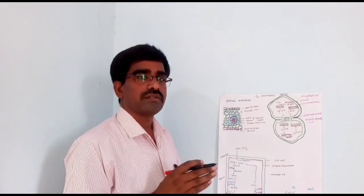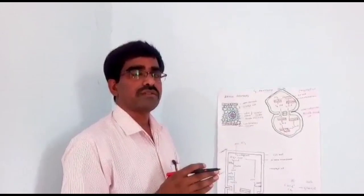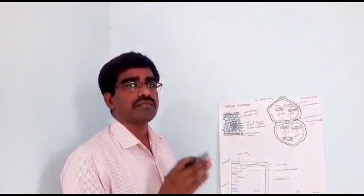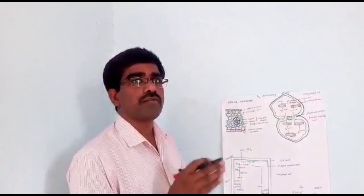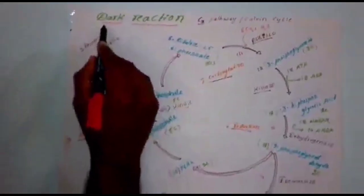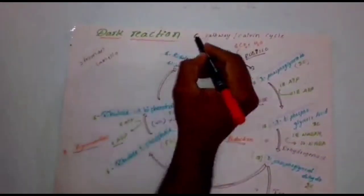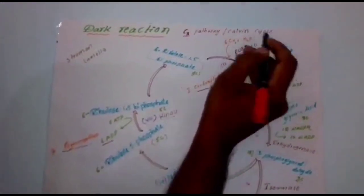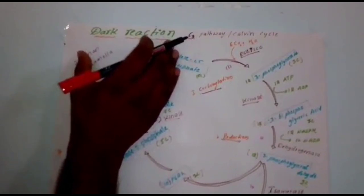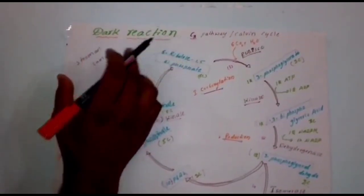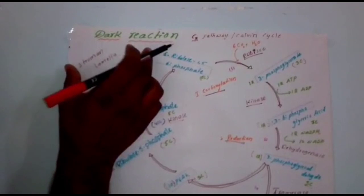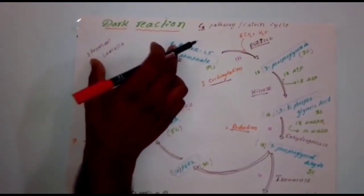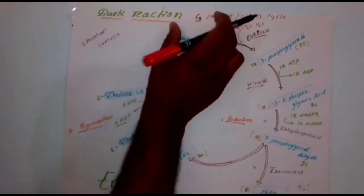This is Rajinder, our NEAT faculty. Today we are going to discuss about C3 path as well as C4 path. Dark reaction, otherwise called as C3 pathway or Calvin cycle, takes place in absence of sunlight in the stroma lamella. Dark reaction is also called as light-independent reaction because light is not necessary.